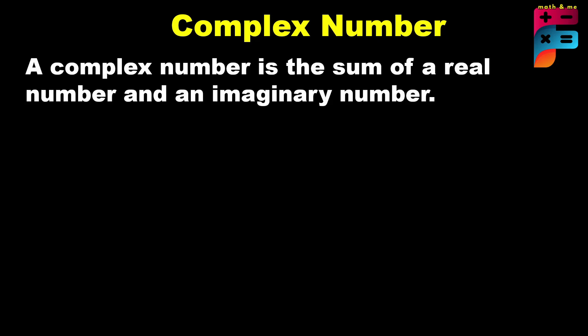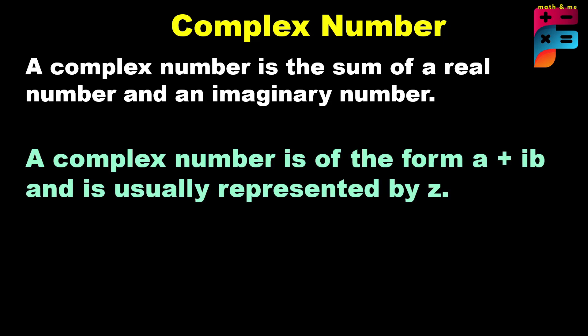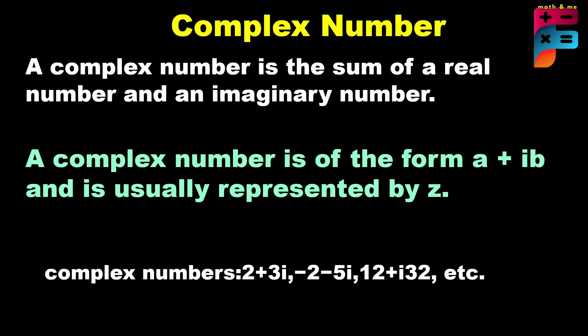Our last topic is complex numbers. A complex number is a sum of a real number and an imaginary number. A complex number is of the form a + ib, usually represented by z. Examples include 2 + 3i, -2 - 5i, and 12 + 32i.